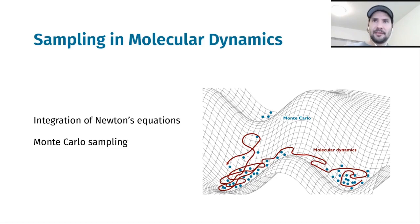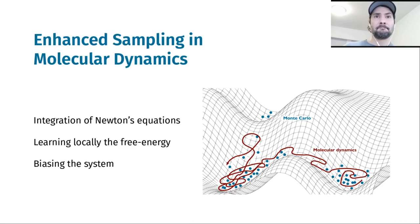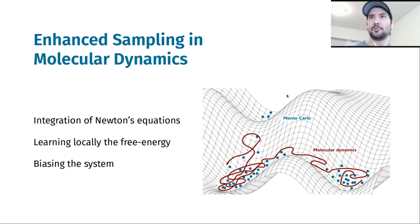When we perform molecular dynamics simulations, two of the most common approaches to explore the state space of a system are either to integrate Newton's equations or to perform a Monte Carlo sampling. My work involves methods that rely only on integration of equations of motion, so I'll focus only on this. Enhanced sampling methods can be described as strategies to better sample the state space of a given system by learning the free energy landscape locally and using that information to bias the system towards states of higher energy that might otherwise be hard to reach.